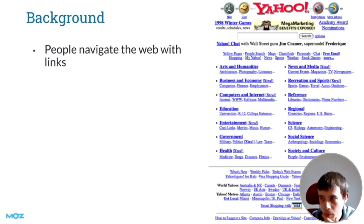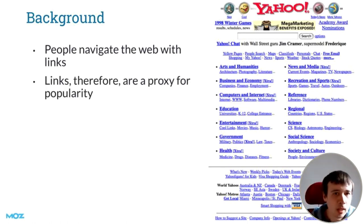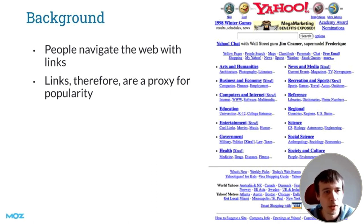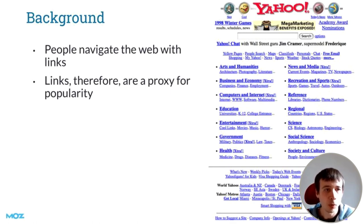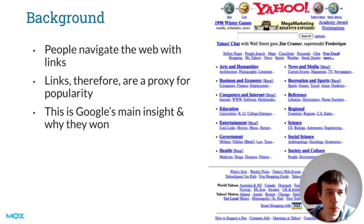This is important: if a lot of people browse the web using links and links are primarily a navigational thing, then we can get some insights from looking at links. Links are a sort of proxy for popularity. If we assume that everyone starts their journey on the internet on Yahoo in 1998, then the pages linked to from Yahoo are going to get a lot of traffic — they're popular by definition. The pages those pages link to will also still get quite a lot, and so on. Through this we could build up a picture of what websites are popular, and popularity matters because popular websites shown in search results will be more trustworthy and likely to be good.